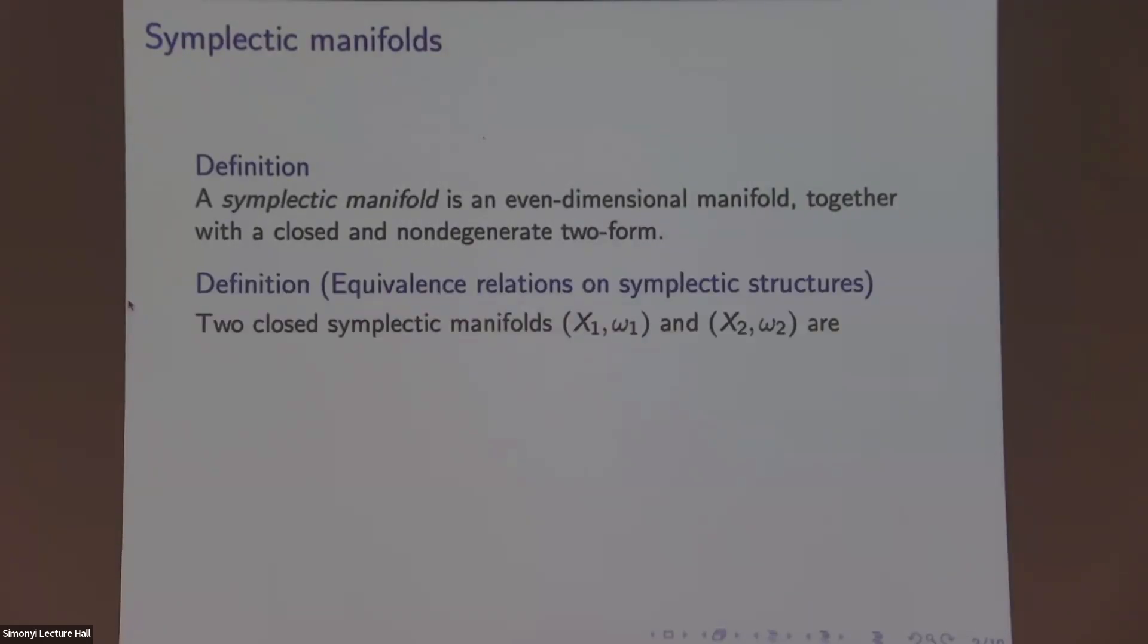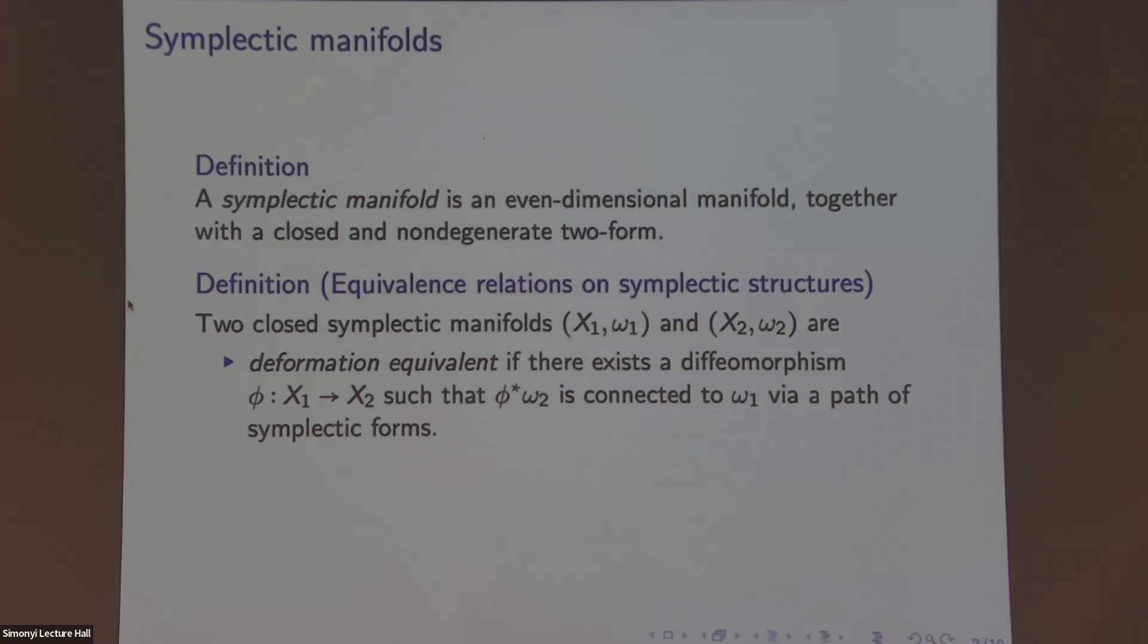We can put various relations on the space of symplectic structures. Some usual ones are deformation equivalence. We say two symplectic manifolds are deformation equivalent if there's a diffeomorphism that pulls back one symplectic form to the other via a path of symplectic forms.